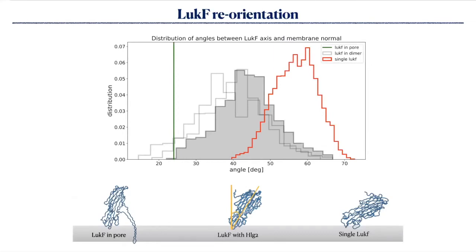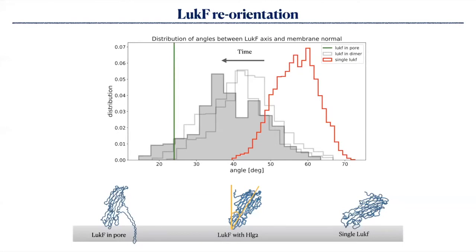I also computed the angle between the axis of LukF — which was tilted at the beginning of the simulation — and the membrane normal. The distribution of this angle in red shows that the monomer is really tilted in the single-LukF simulation. In grey, the distribution of the same angle when LukF is interacting with the other component shifts towards lower angles during simulation time. I also reported the value of the orientation angle that LukF has in the final pore.